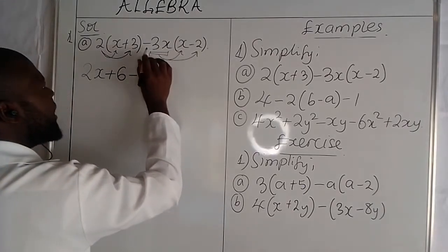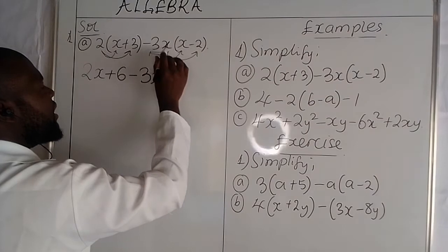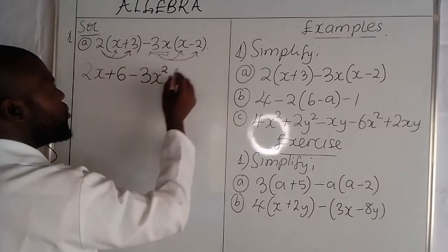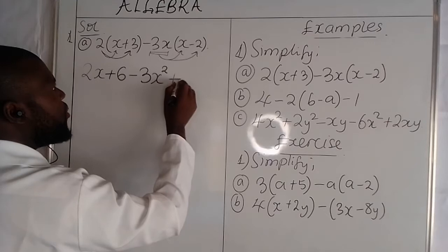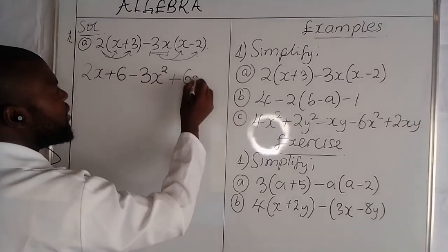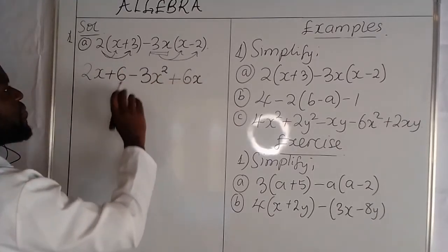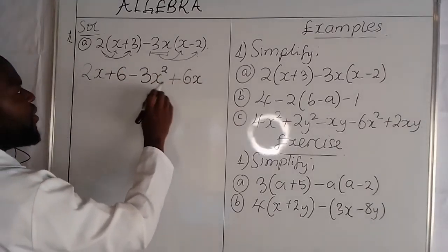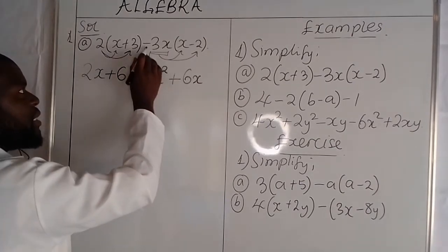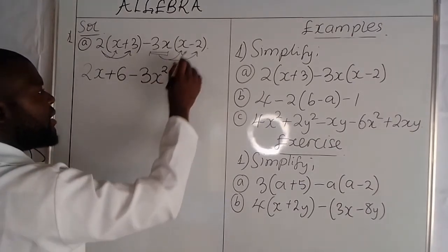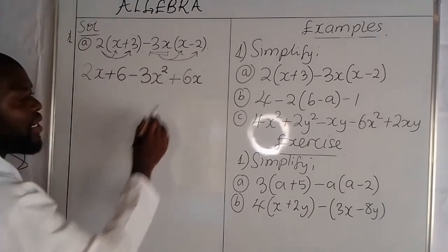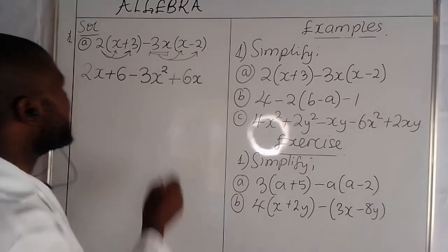Then negative 3x multiplied by negative 2 gives us positive 6x. This positive is coming from negative times another negative.